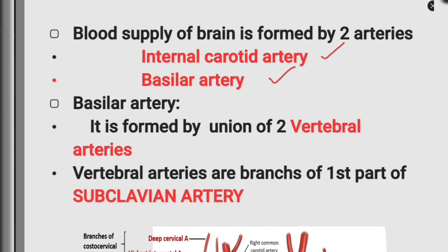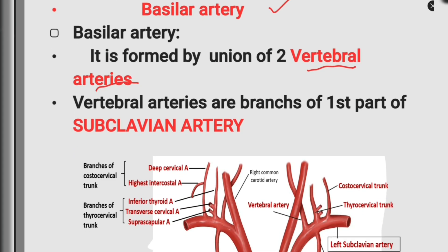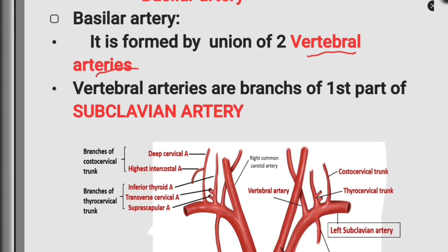What is the basilar artery? It is formed by the union of two vertebral arteries. And what is the vertebral artery? Vertebral arteries are branches of the first part of the subclavian artery.